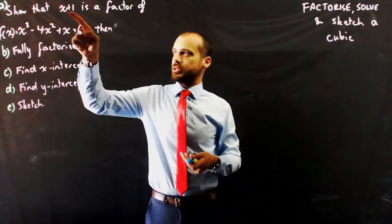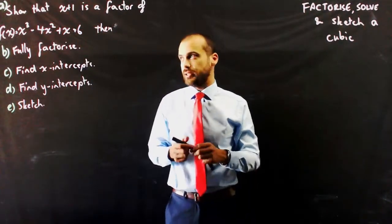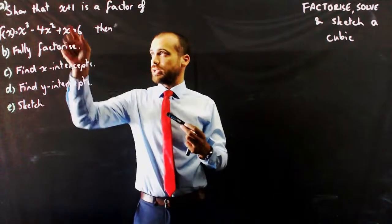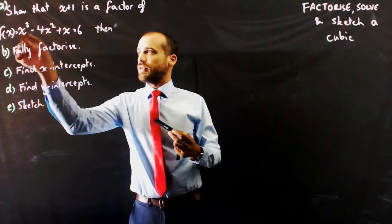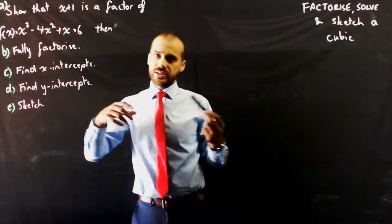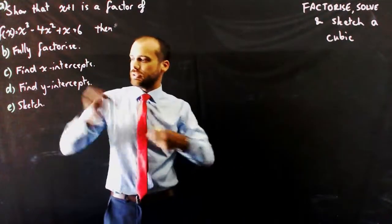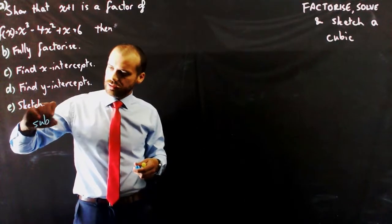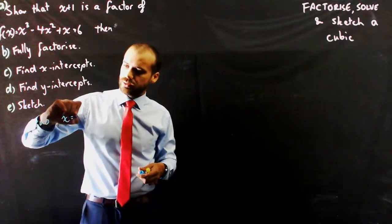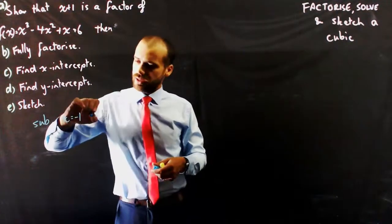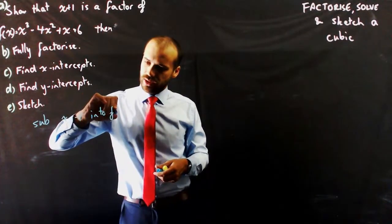So, to show that x plus 1 is a factor, I'll know that if I put in negative 1 for x, if f of x is equal to 0 at that point, then x plus 1 is a factor. So, step 1, sub x equals negative 1, the opposite of that, into f of x.